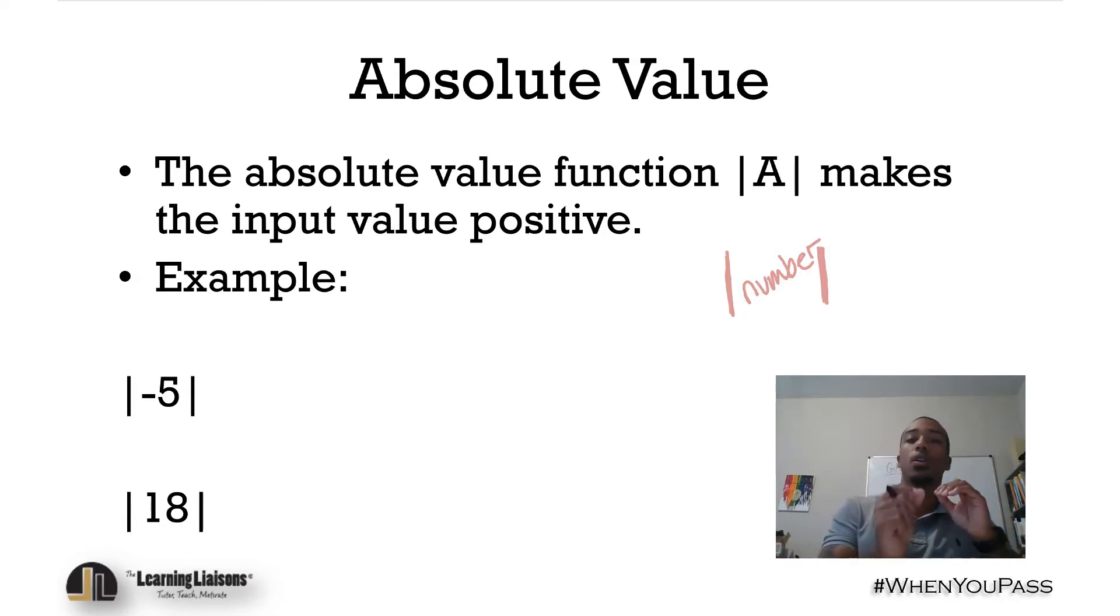You'll never hear someone say 'negative 3 feet' or 'negative 99 centimeters.' We'll always discuss distance as positive units. So that absolute value function just describes the distance a number is on the number line from zero. Whether it's positive 2 or negative 2, the distance is still 2.